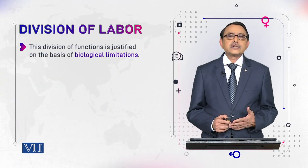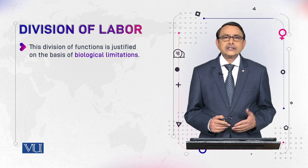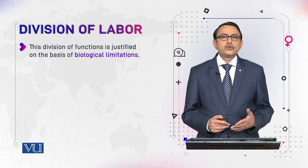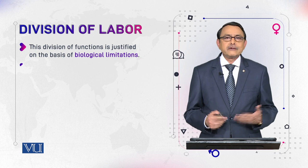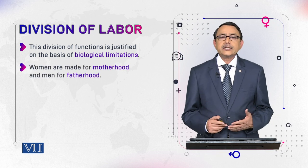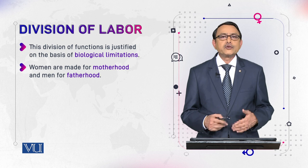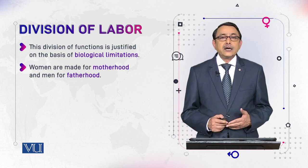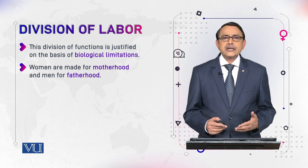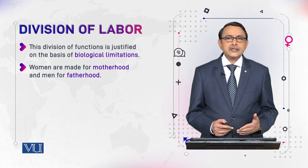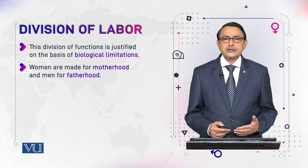This division of functions is justified on the basis of biological limitations — it is thought that women can't do things which men can do, and this is considered biologically impossible for them. Women are made particularly suitable for childbearing, child nursing, and motherhood — in other words, reproductive functions. Men, on the other hand, are seen as good for fatherhood, earning bread for the family, doing hard work, and contributing to society through important activities outside the home.